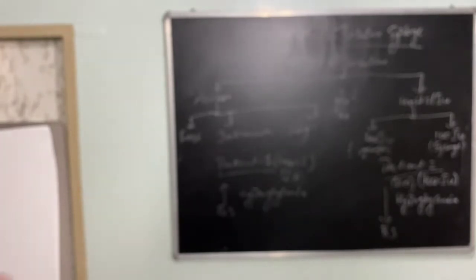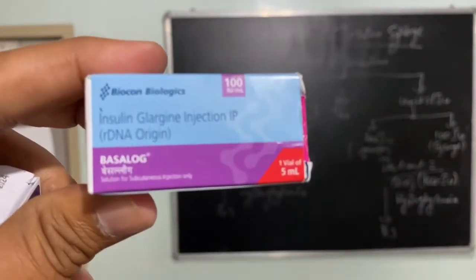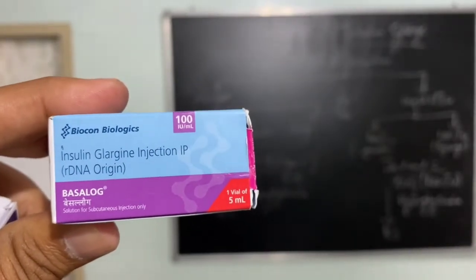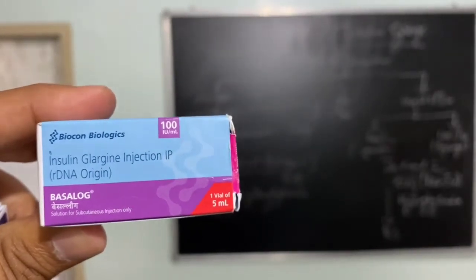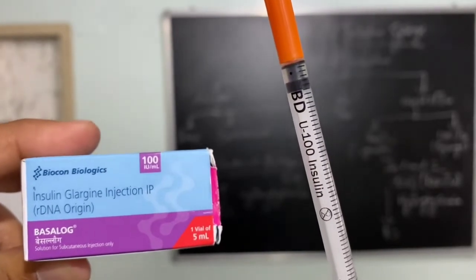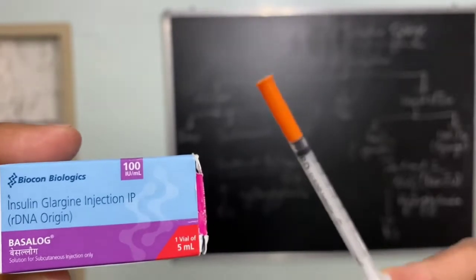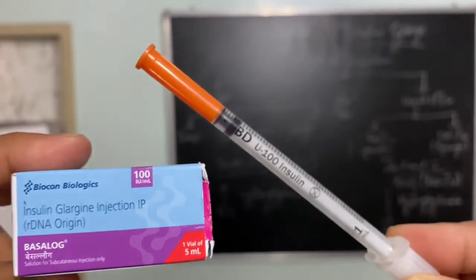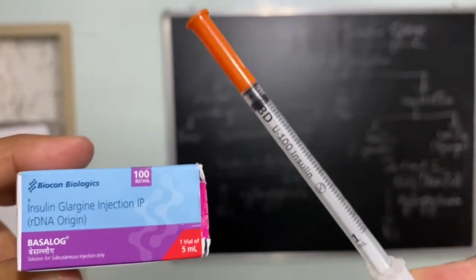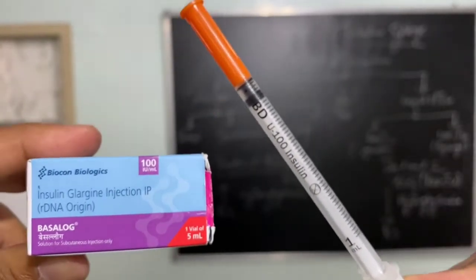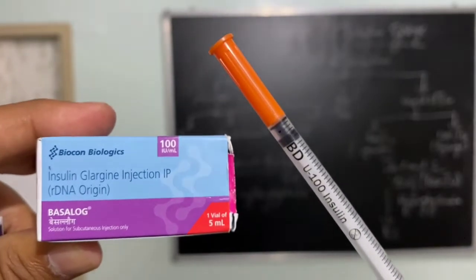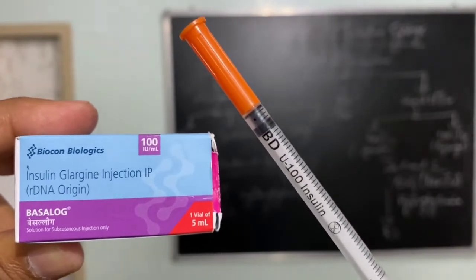Next, check this — it is clearly written '100-unit insulin.' It should be taken with the 100-unit insulin syringe. See the color — it is in orange color. So you need to use 100-unit insulin with the 100-unit syringe.